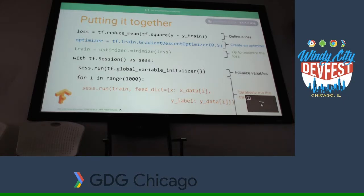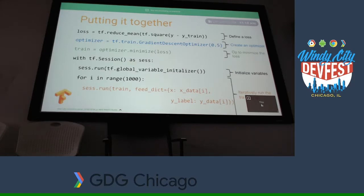Question: how are you estimating how many iterations you have to go through to find the most optimal path? That is right now a very manual task — you have to identify how many steps you should go and what the minimum step should be. But somebody is working on making sure these steps can be identified by machines too.